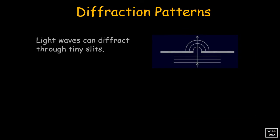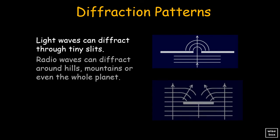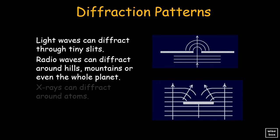Light waves can diffract through tiny slits. Radio waves can diffract around hills, mountains, or even the whole planet. X-rays can diffract around atoms.